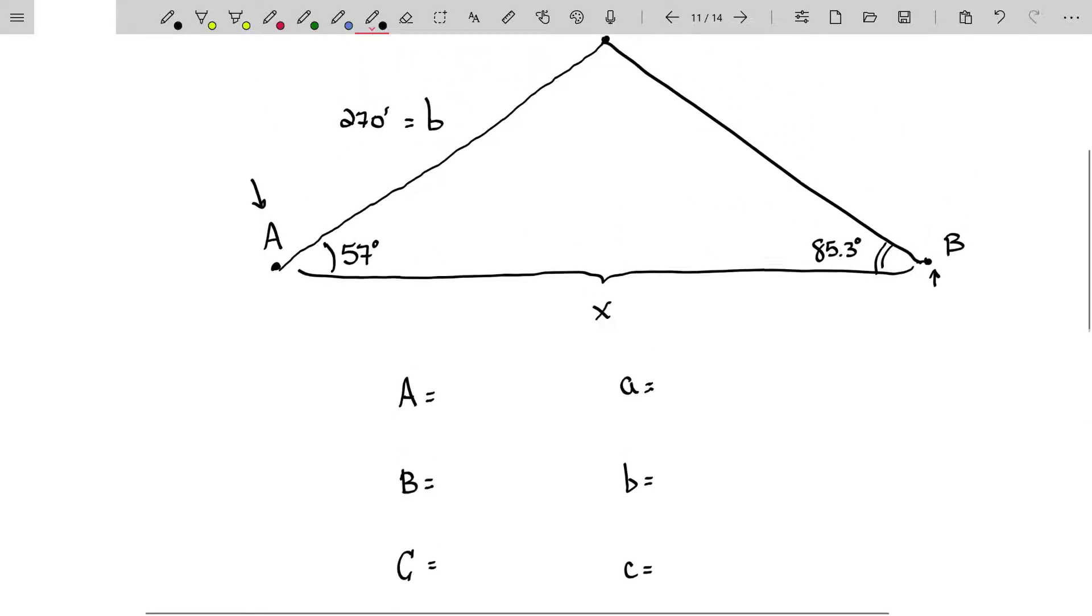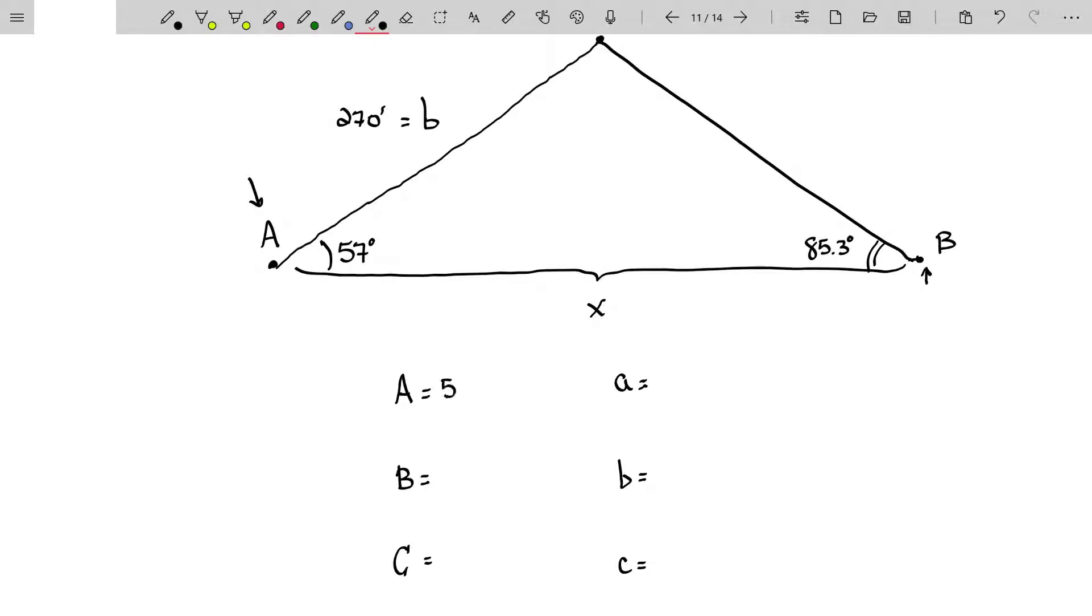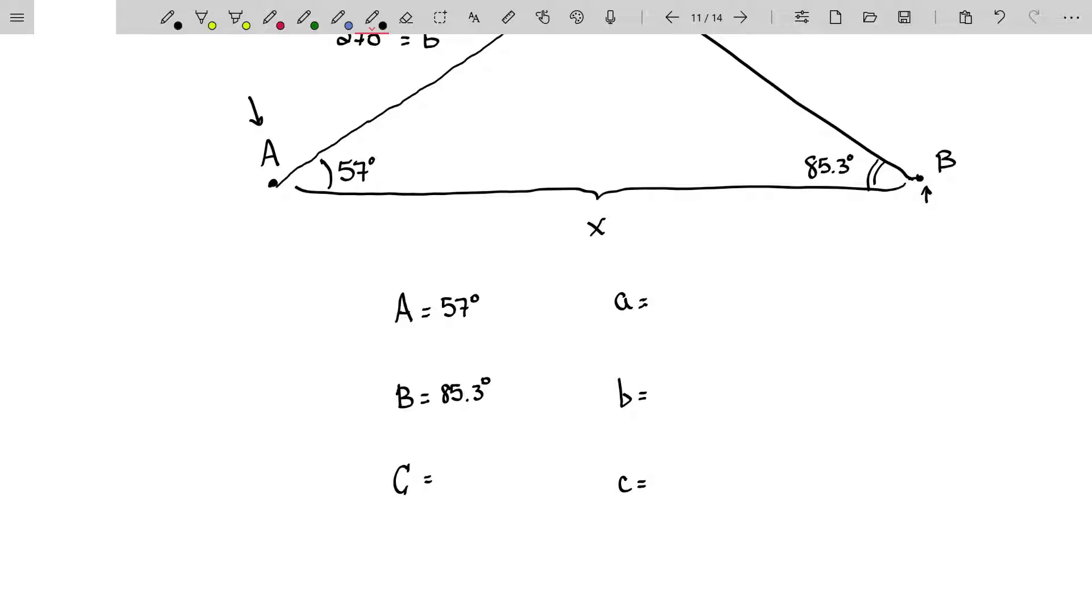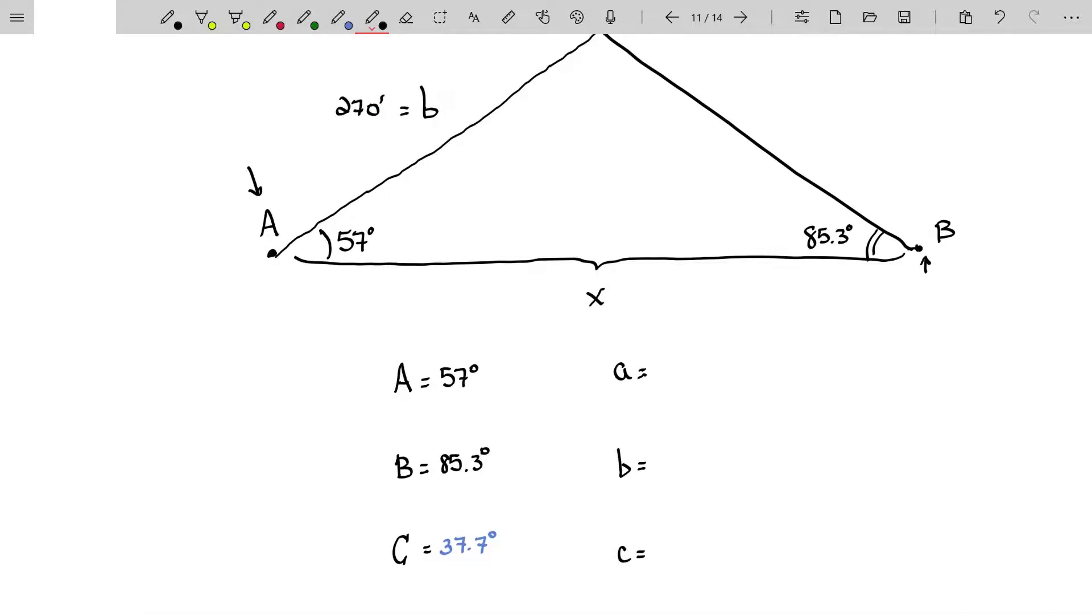So let's see what they've given us. Angle A they've given us is 57 degrees. Angle B they've given us is 85.3 degrees. I might as well just fill in angle C because it's just 180 minus 57 minus 85.3. And that would be 37.7 degrees. Not roughly, but exactly. They gave a side B is 270, but that's feet.